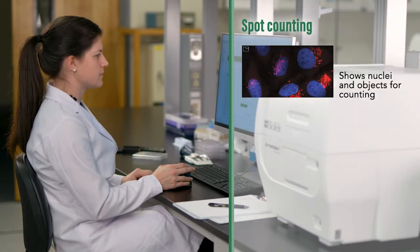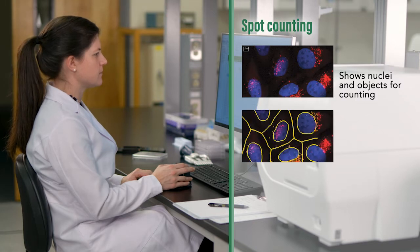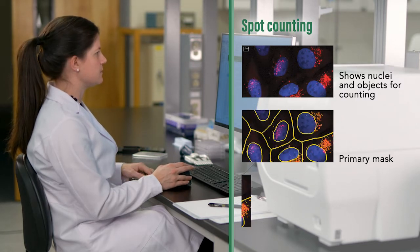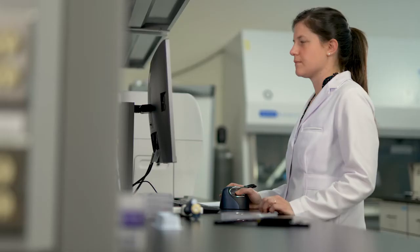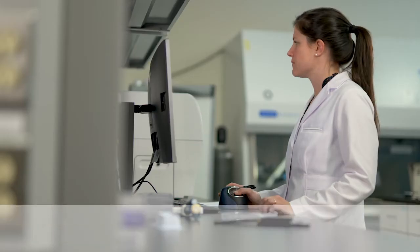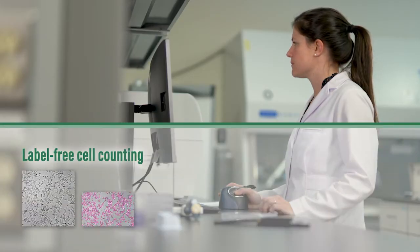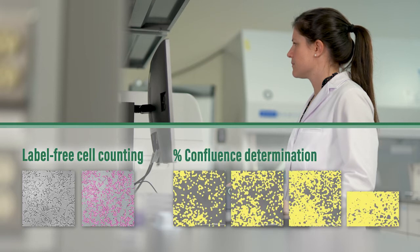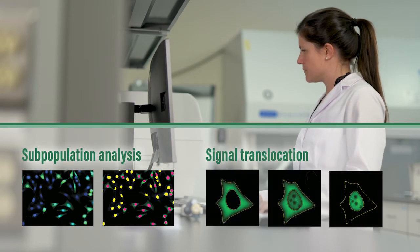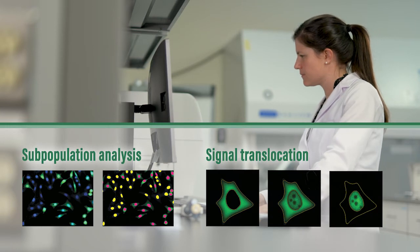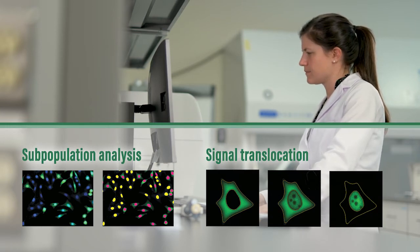Gen5's unique spot count function allows in-depth analysis of intracellular objects or spots within a primary or secondary mask. Many other applications, including label-free cell counting, percent confluence determination, subpopulation analysis, and signal translocation, are efficiently and automatically analyzed with the powerful tools in Gen5.